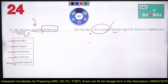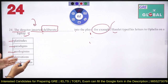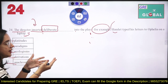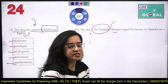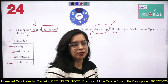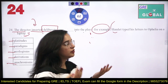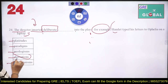Derivation — everyone knows derivation means the act of obtaining something from a source; ham kisi cheez ko source se deduce karte hain. But here it is a simple statement — we are not receiving or conceiving any idea from a source. So derivation is eliminated.